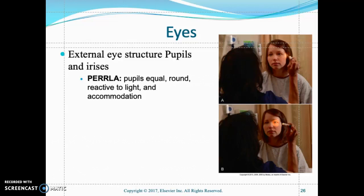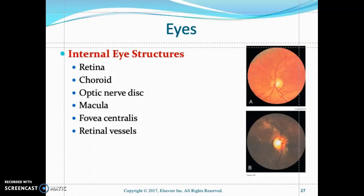To perform the PERLA test, the nurse dims the lights and asks the patient to look straight ahead. The nurse goes to the side and shines a light on the side of the eye. The normal response will be constriction — for example, a pupil at three millimeters should constrict to one millimeter. Instruct the patient to avoid looking at the light. Dim the lights before using the pen light.